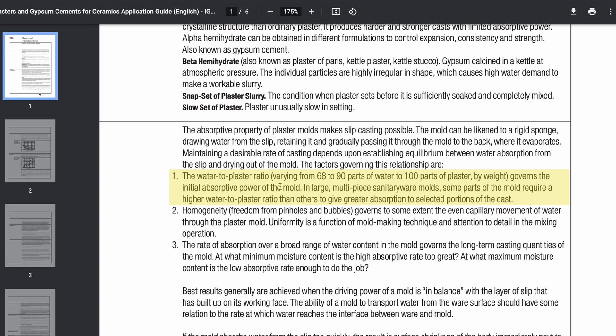Some parts of the mold require a higher water to plaster ratio than others, giving greater absorption to the select portions of the cast. So it's also saying that the more water there is, so closer to the 90 end, it will absorb more water. So that is one of the variables. So I think I'm going to test 70, 80, and 90 parts of water to plaster.